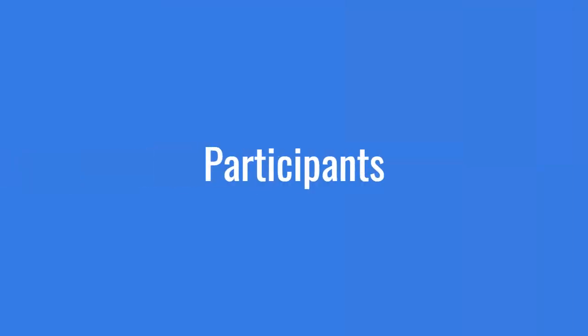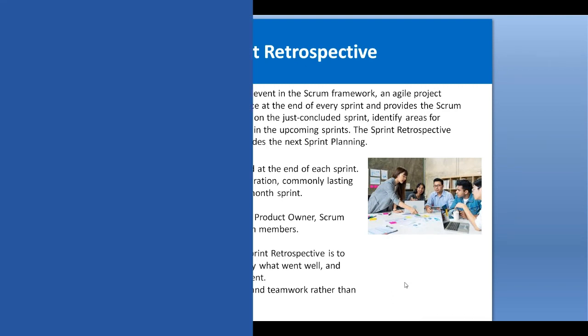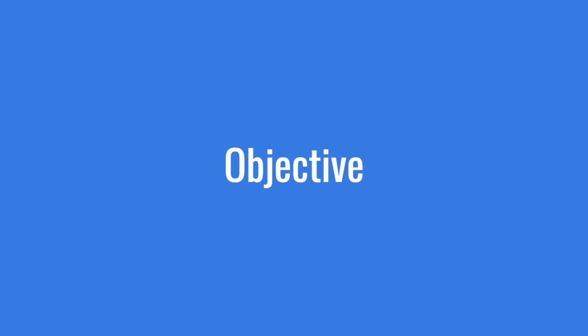Participants for the sprint retrospective meeting include the scrum development team — software developers, engineers, designers — the product owner, who is basically the custodian of the requirements and feature sets, and the scrum master, who is the facilitator for the scrum. So the core team: product owner, scrum development team, and scrum master participate in this sprint retrospective session.